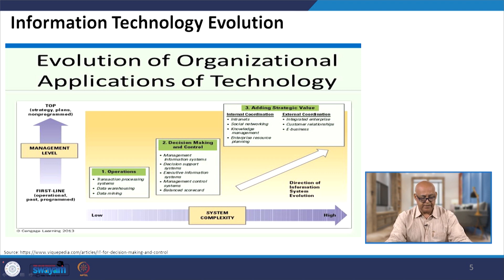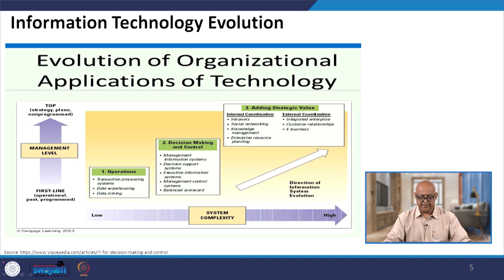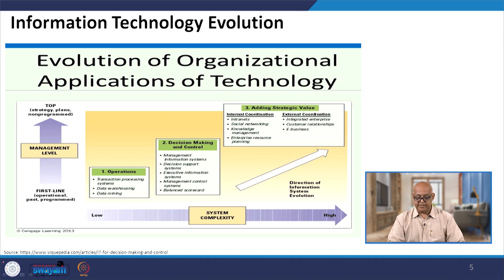Second is decision making and control, which includes management information systems, decision support systems, executive information systems, management control systems, and the balanced scorecard. Adding strategic value involves internal coordination — intranet, social networking, knowledge management, and enterprise resource planning — and external coordination including customer relationships and e-business.